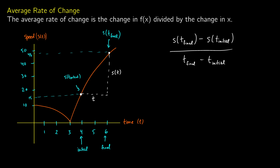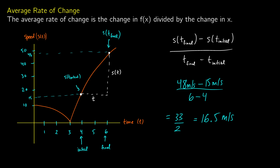These times could be changing depending on your question. Substituting into our formula: at our final time we're going to be at 48 meters per second, and we subtract 15 meters per second because that's our initial value. 6 is our endpoint and 4 is our beginning. So we calculate 33 divided by 2, which gives us a change of 16.5 meters per second. That is the average rate of change — overall, from initial to end point, we're changing on average about 16.5 meters per second.